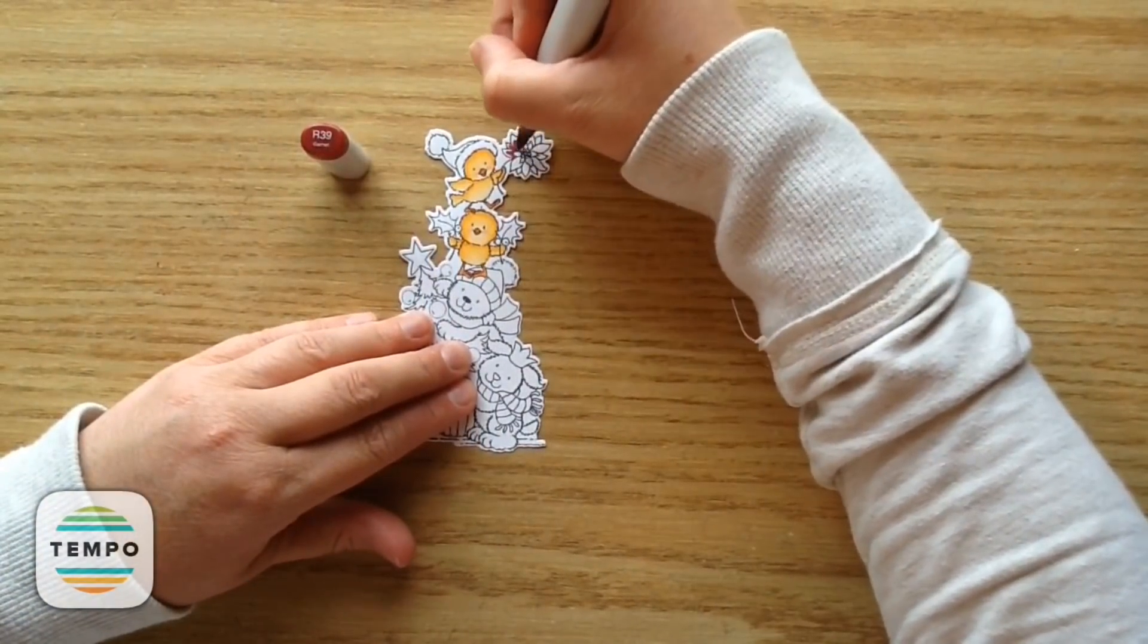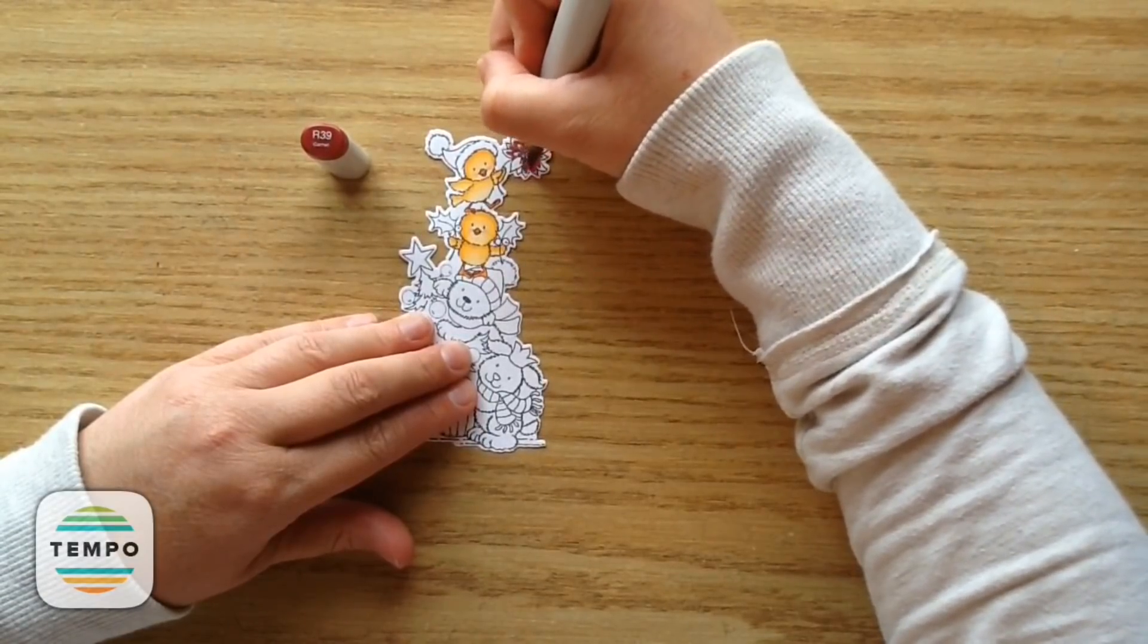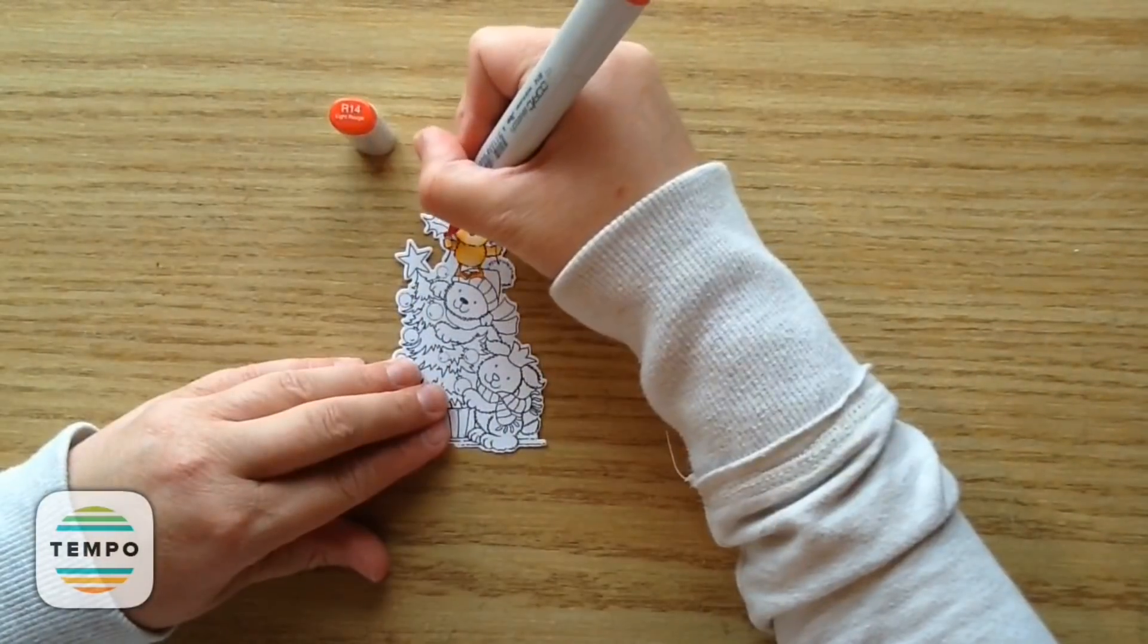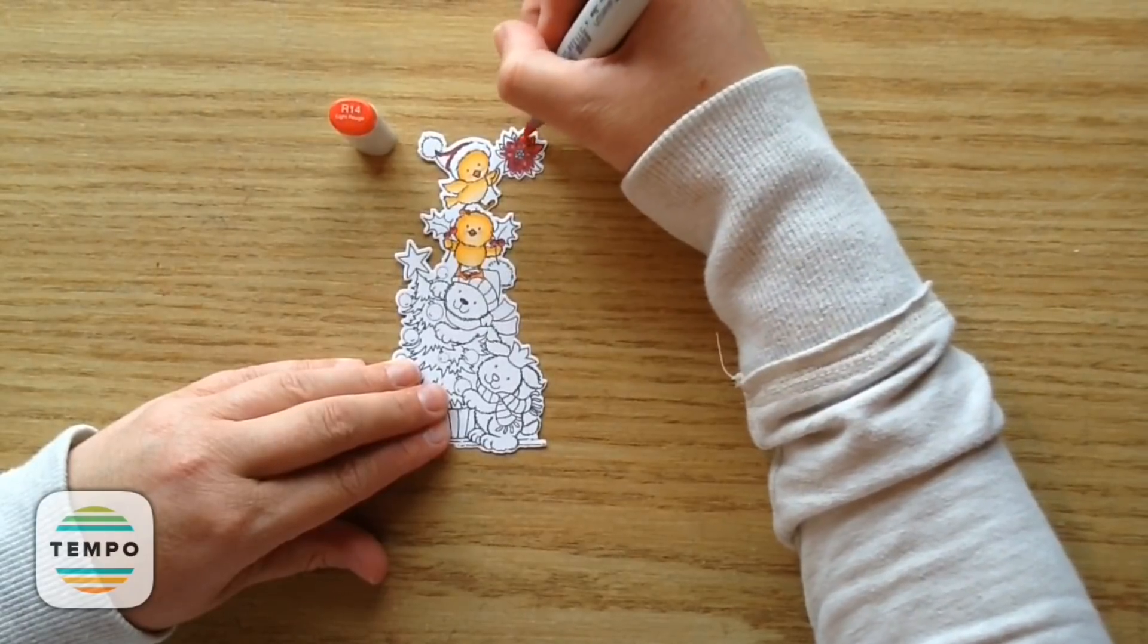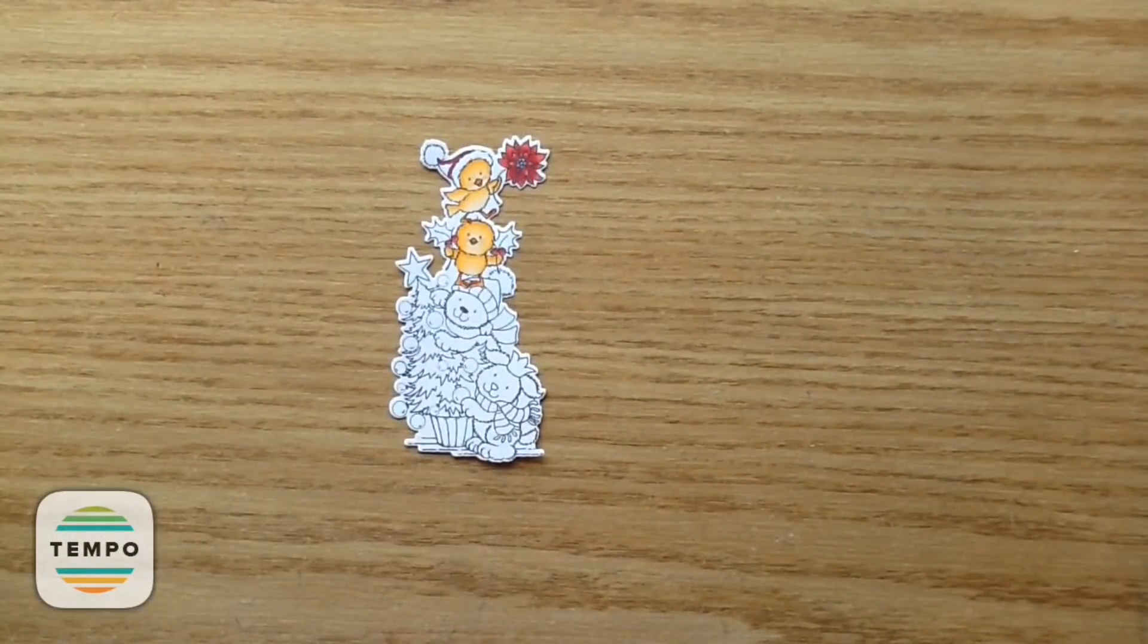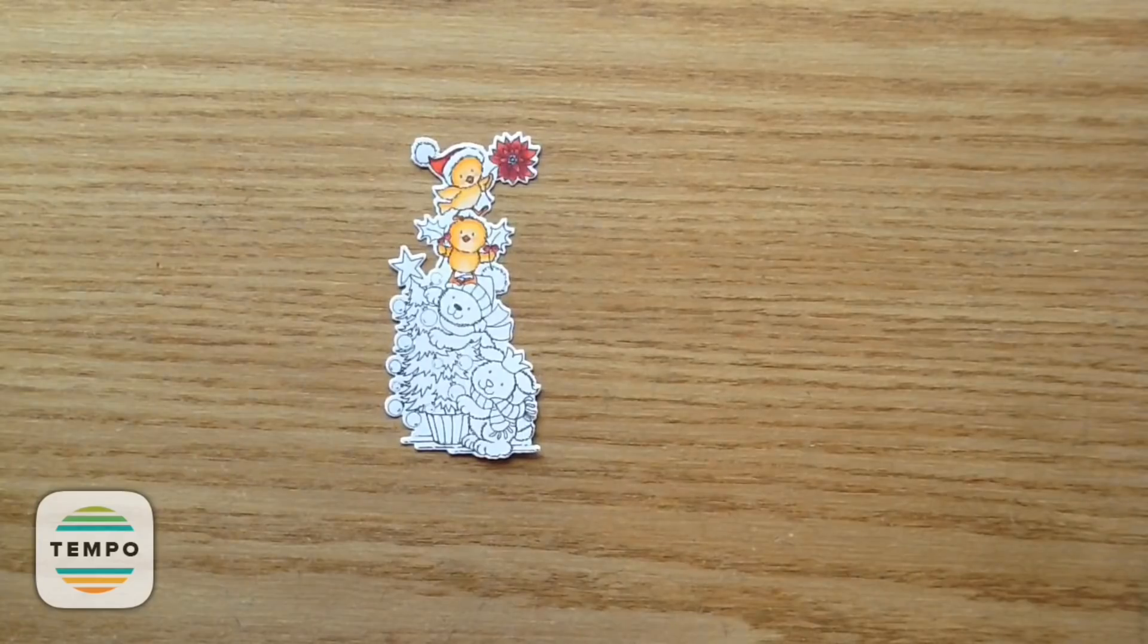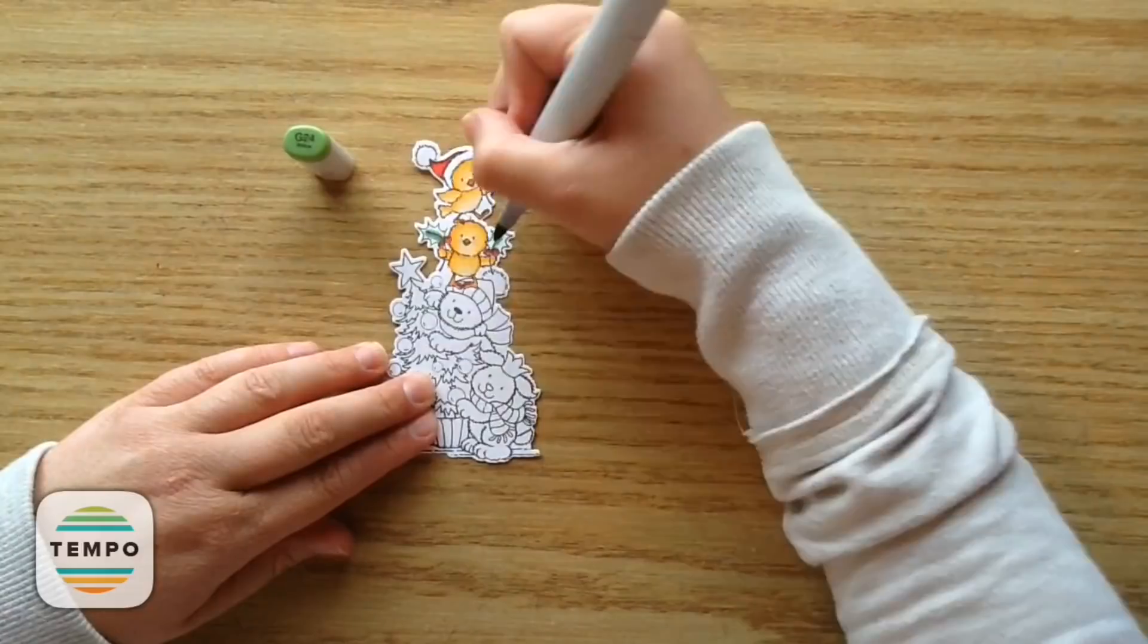Then for the red, I used R39 on the little poinsettia. And I blended that out with R14. And there's another stamp that is called the Cute Stack and it's an Easter one. And I just fell in love with that image. So if you really like these long, kind of like vertical images, definitely check them out over on the site. Because there are so many cute ones. They are so cute for bookmarks or any type of middle of a card. It just fits so perfectly.